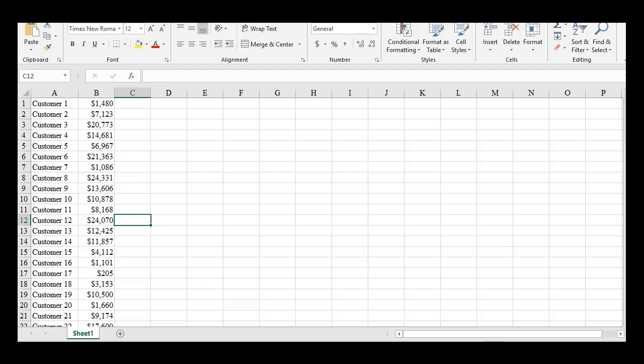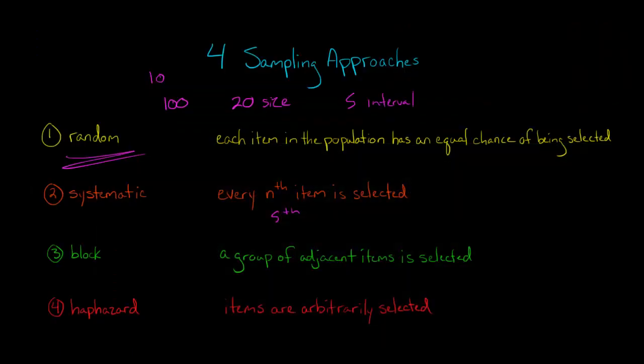Or let's say we want a sample size of 20. We're just going to take the first 20 customers. They're all adjacent. It's all together. It's just one big block. So that's block sampling.